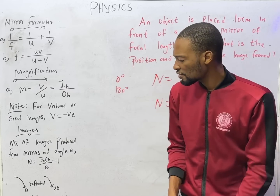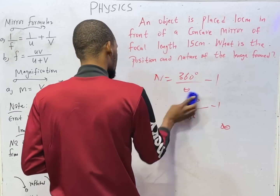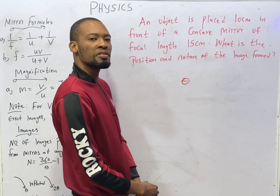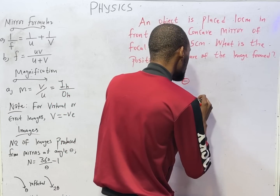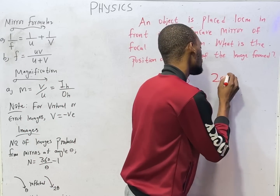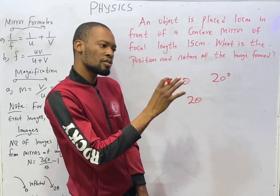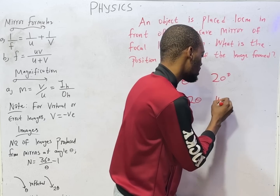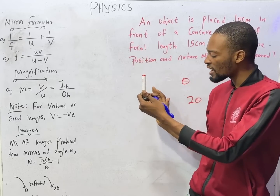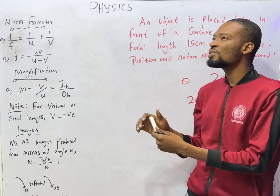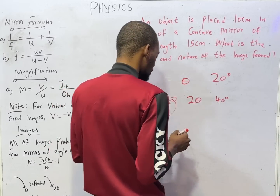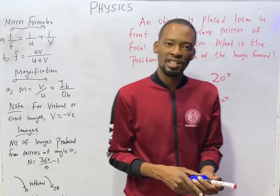There is something else to take note of. If a mirror is rotated at an angle theta, the reflected ray will be rotated two times that angle. For example, if a mirror is rotated at 20 degrees, the reflected ray will be rotated at 2 times 20, which is 40 degrees. If a mirror is rotated at an angle, the reflected ray is rotated at twice that angle. All this will start to make sense very soon.